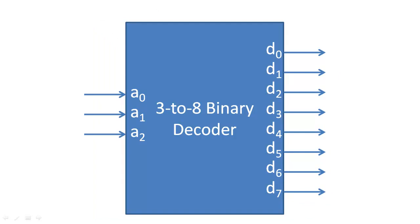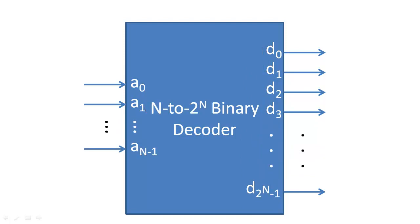Once we have designed a binary decoder, we abstract its content and represent it with a box that receives a binary code and outputs a set of data outputs that correspond to the different minterms. Generally, each binary decoder will have N inputs and 2 to the N outputs.